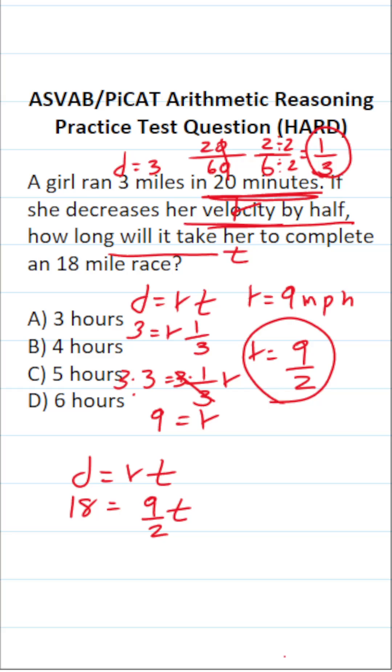To solve for t, we have to clear this 9 over 2 in front of t. And to do that, we're going to multiply both sides of this equation by the reciprocal of 9 over 2, which is 2 over 9. This crosses out here and here, leaving you with t on this side. What is 2 over 9 times 18? We'll write 18 as a fraction by placing it over 1. Cross reduce. 9 goes into 9 one time. 9 goes into 18 two times. This is 2 over 1, which is 2, times 2 over 1, which is 2. 2 times 2 is 4. In other words, it's going to take her 4 hours to complete the race.